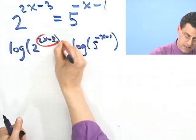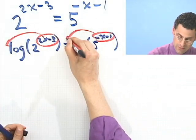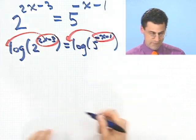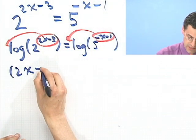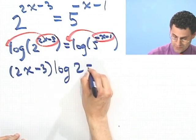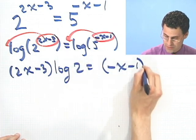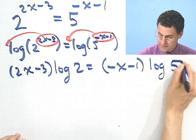log of 2 to the 2x minus 3 equals log of 5 to the minus x minus 1, then I can use laws of exponents to pull this out in front, pull that out in front, and using the log stuff, I see the quantity 2x minus 3 times log of 2 equals the quantity minus x minus 1 log of 5.